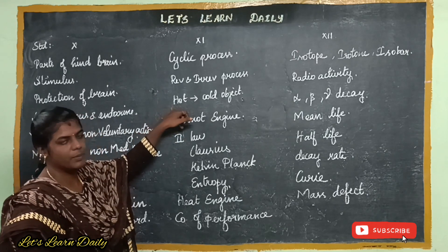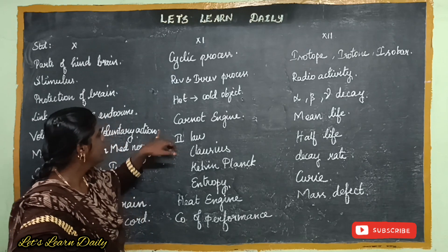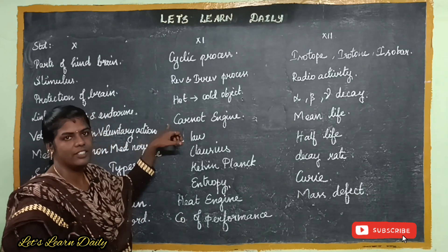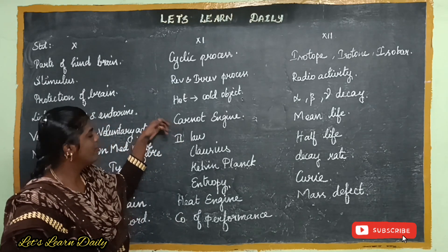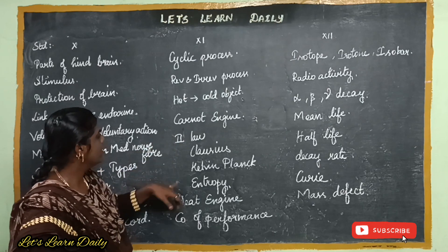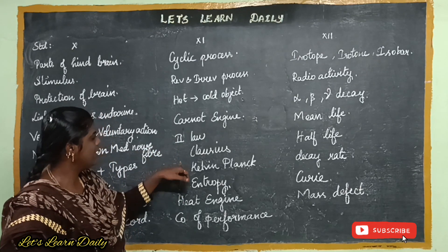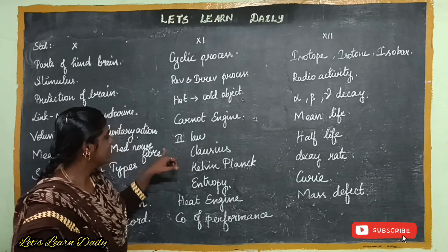Heat does not flow from a hot object to a cold object. Next, Carnot engine — what is the process involved? Next, second law of thermodynamics. Clausius statement. Kelvin-Planck statement.